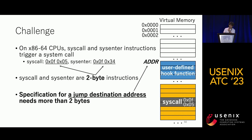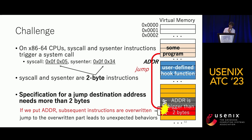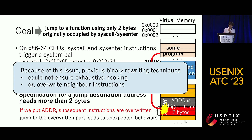If we put the address of the user-defined hook function here, the subsequent instructions are overwritten. If any program jumps to this overwritten part, it will lead to unexpected behavior. Because of this issue, previous binary rewriting techniques could not ensure exhaustive hooking or just override neighboring instructions. The goal of this work is to jump to a user-defined hook function using only the two bytes originally occupied by syscall or sysenter.